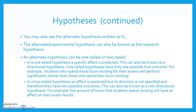In a two-tailed hypothesis, an effect is predicted but its direction is not specified, and therefore they have two possible outcomes. This can also be known as a non-directional hypothesis. For example, the amount of hours that students spend revising will have an impact on their exam results, but it doesn't actually specify which direction — whether it will be better or worse.